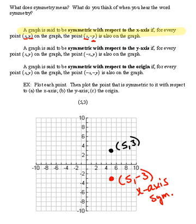Okay, now let's look at the second definition here. A graph is said to be symmetric with respect to the y-axis if for every point (x,y) on the graph, the point (-x,y) is also on the graph.